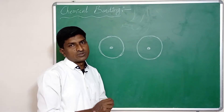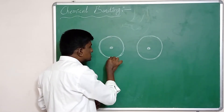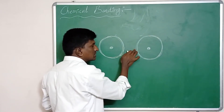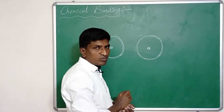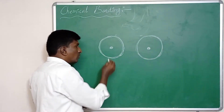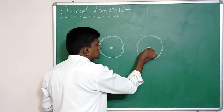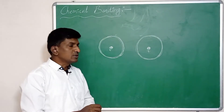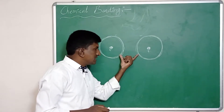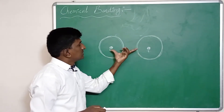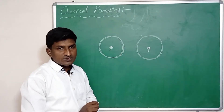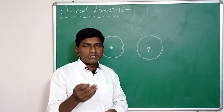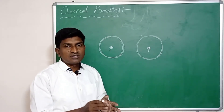The repulsive force is present between the valence electrons of the two atoms, since both have negative charge. There is also a repulsive force between the nuclei of the two atoms, since both carry positive charge. The combination of atoms is decided by the strength of these attraction and repulsive forces.